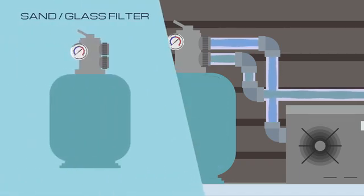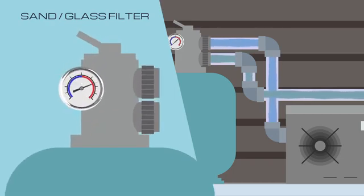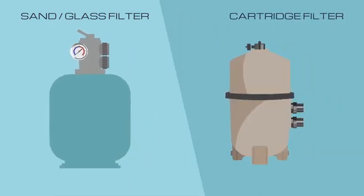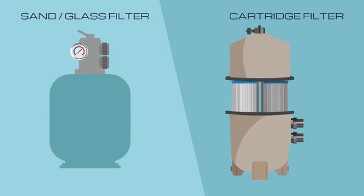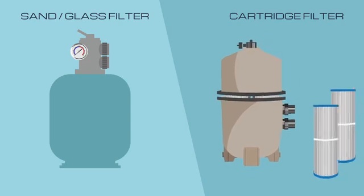Sand or glass filters will need to be backwashed every 8 to 10 weeks or depending on the pressure gauge so be sure to check it regularly. Cartridge filters on the other hand need to be cleaned manually every 8 to 10 weeks. It's a good idea to have a spare cartridge so you can swap them out and clean it later.